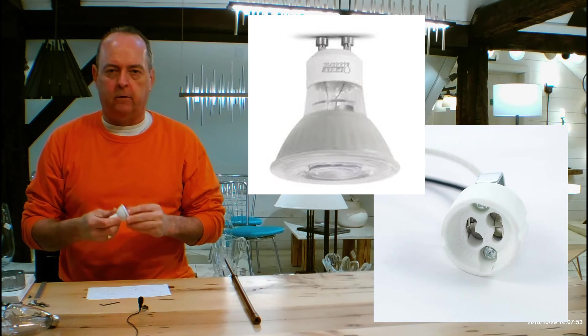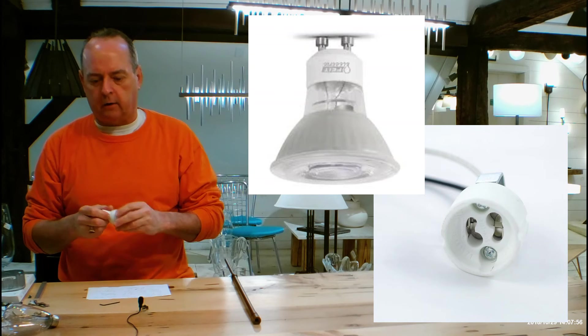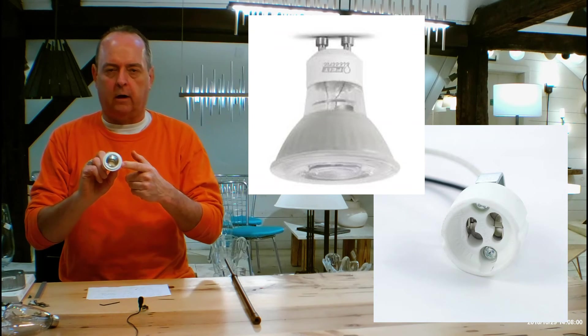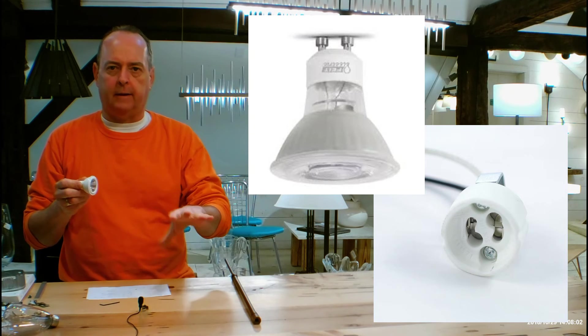It's a dimmable fixture, so just make sure both bulbs are dimmable. We know halogens are without a problem. Make sure your LED is, and then you can choose the color of the light coming out of that LED.